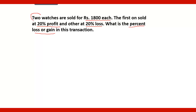There are two watches which are sold at Rs. 1800 each. It means the selling price of both watches is Rs. 3600 — Rs. 1800 for the first watch and Rs. 1800 for the other watch. So the total selling price will be Rs. 3600.